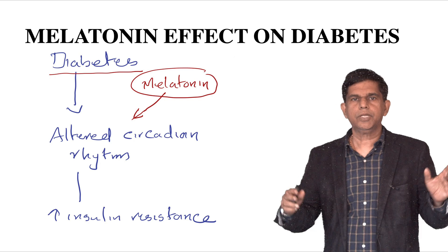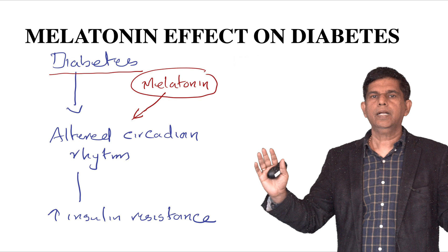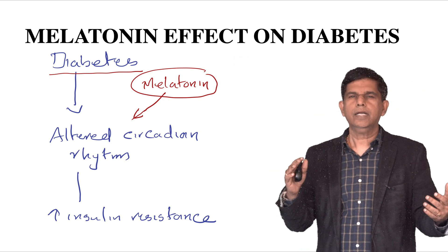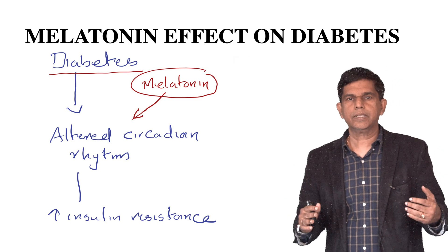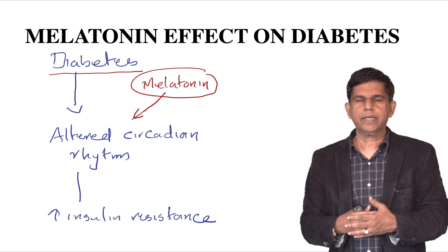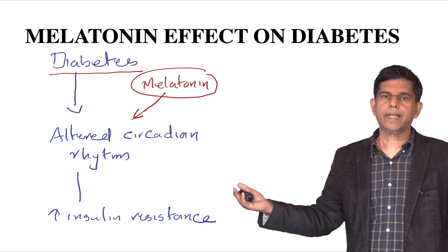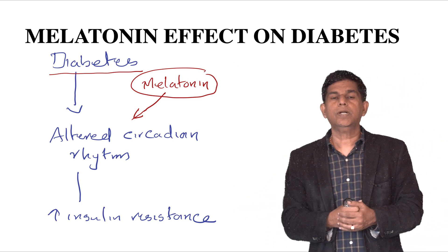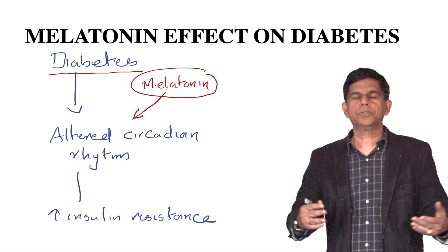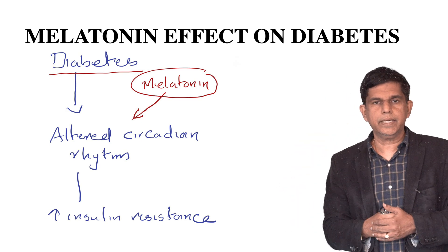Another key mechanism is melatonin's role in circadian rhythm — the body clock — and how it regulates our sleep mechanism. When a person has an altered circadian rhythm, their sleep pattern is different, their eating and resting cycle is different, and all of this contributes to increased insulin resistance, increased blood sugar, and diabetes. Melatonin resets our circadian rhythm to a normal 24-hour biological clock.